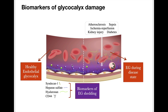As the endothelial glycocalyx layer gets damaged, shedding of its structural components occurs. These components enter the plasma and can be used as biomarkers of glycocalyx damage — for example, plasma levels of syndecan-1, heparan sulfate and hyaluronan.